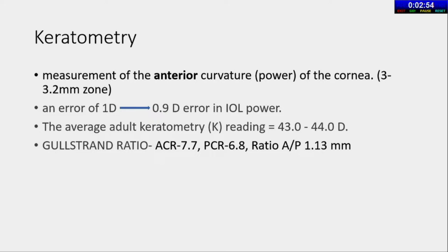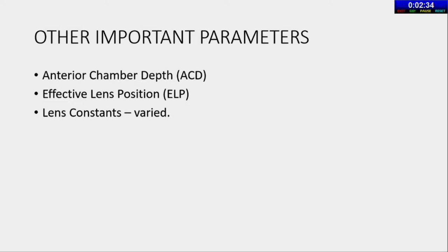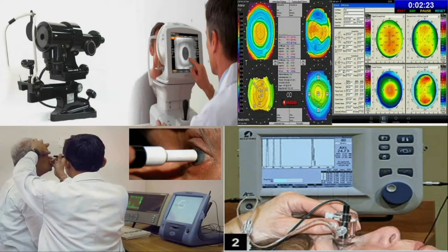Remember the Gullstrand ratio - the ratio between anterior and posterior corneal radius, approximately 1.13. It is affected in LASIK, where changing corneal curvatures alters the ratio and hence IOL power measurement. Important parameters are ELP and ACD, but remember the effective lens position is only predictable, not exactly calculable. Various lens constants are provided by manufacturers for their lenses.